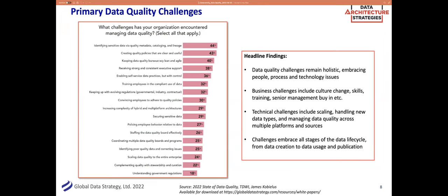Looking at those challenges in terms of people issues, process issues, and technology issues — roughly six of them are primarily people issues, such as getting support of senior executives for improving data quality. Five are process-related, for example introducing stewardship and curation within the governance framework. And there are technology issues as well, like scaling data quality to the entire enterprise. Nothing has changed in that respect: if you're trying to tackle data quality, the problems are holistic — they're about people, process, and technology. The only way to solve them is holistically, with solutions that embrace all three.